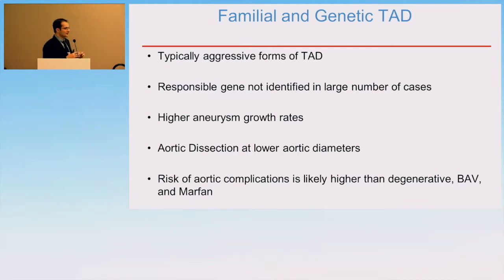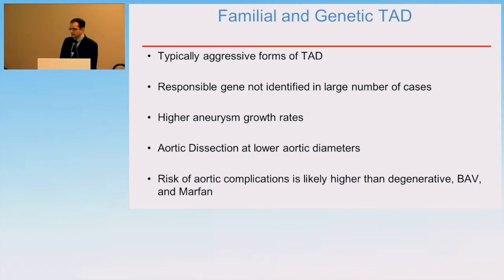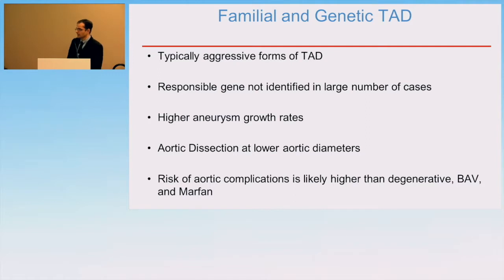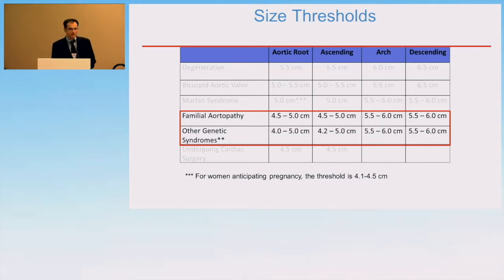Beyond Marfan syndrome, other subcohorts of disease are much harder to pin down. They represent a heterogeneous group, and the virulence of each diagnosis is not always clear, whether you're talking about Loeys-Dietz syndrome, Turner syndrome, or other familial aortopathies. Familial aortopathies are treated with great care, as growth rates in this population are higher than the general population, and the risk of aortic complications appears higher than in degenerative disease, bicuspid aortic valve disease, or Marfan syndrome. For both familial aortopathy and other genetic syndromes, there's a wide range of acceptable surgical thresholds, and it's recommended that these patients be evaluated by a multidisciplinary team.